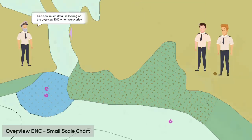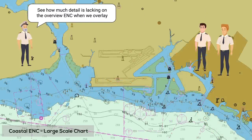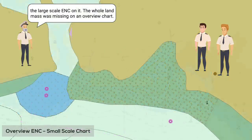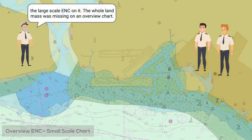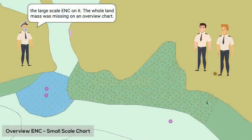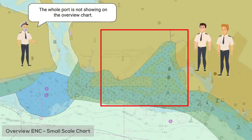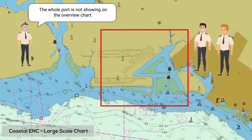See how much detail is lacking on the overview ENC when we overlay the large-scale ENC on it. The whole landmass was missing on the overview chart. The whole port is not showing on the overview chart.